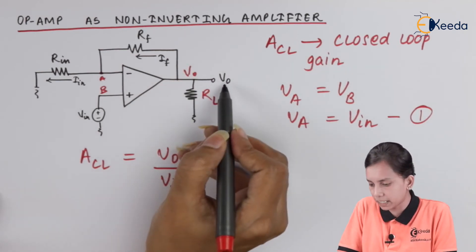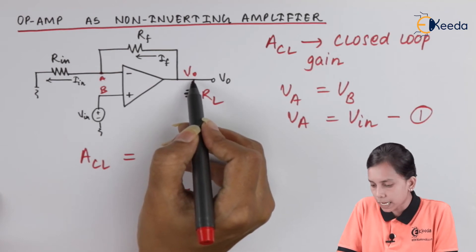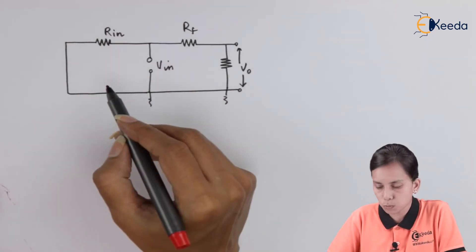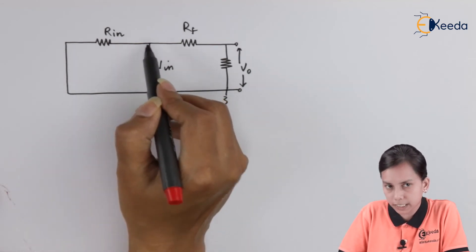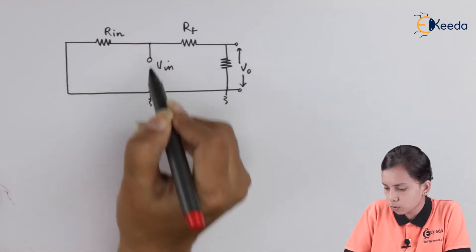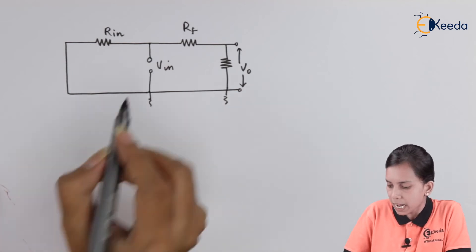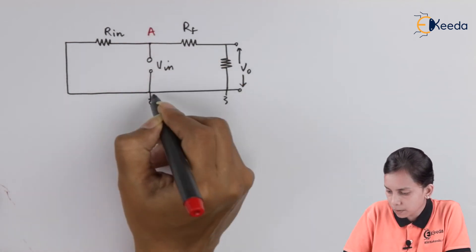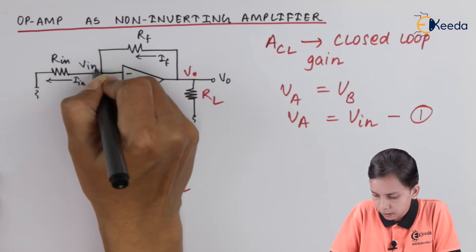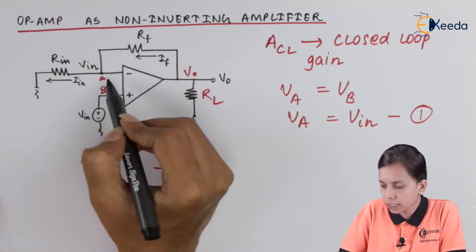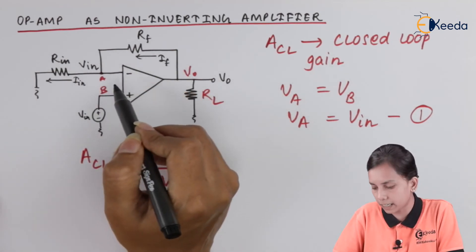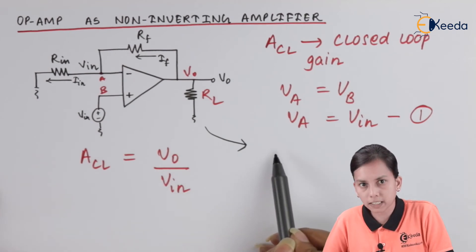Don't get confused — V_0 is the voltage across R_L as well as across R_F. In order to explain this clearly, we are replacing the original circuit diagram with a simpler equivalent circuit that does not use OPAMP directly, to help calculate V_input and V_0. So don't get confused by this next diagram.